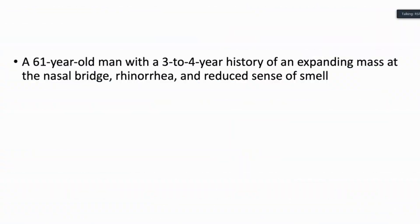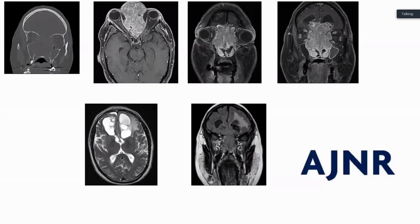61-year-old man with a 3 to 4 year history of an expanding mass at the nasal bridge, rhinorrhea, and reduced sense of smell. On CT coronal images, there is significant destruction of bones with expansion of the nasal cavity. On MRI, there is a significantly enhancing mass in the nasal cavity extending upward into the brain parenchyma through the cribriform plate, which is eroded. On T2 sequences, there are multiple cystic T2 hyperintense areas with surrounding edema.